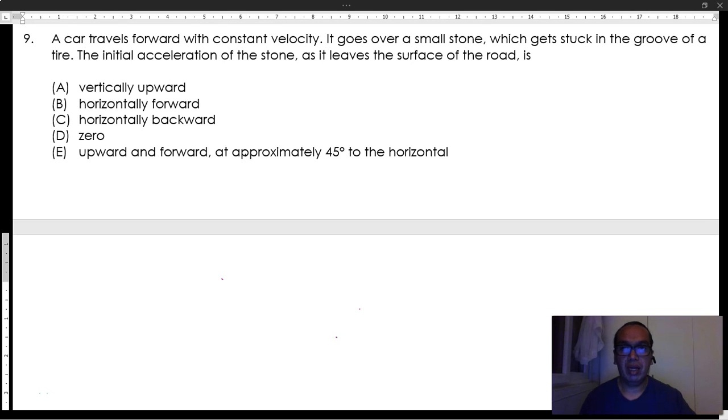Number 9. A car travels forward with constant velocity. It goes over a small stone which gets stuck in the groove of a tire. The initial acceleration of the stone as it leaves the surface of the road is...